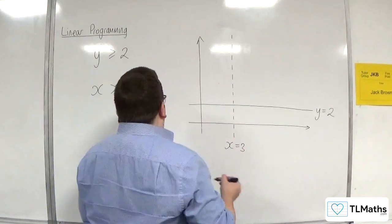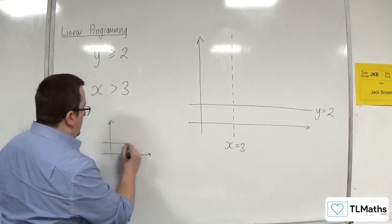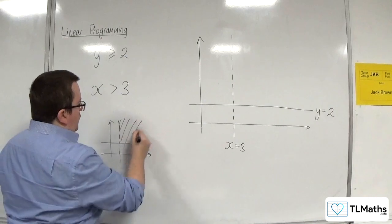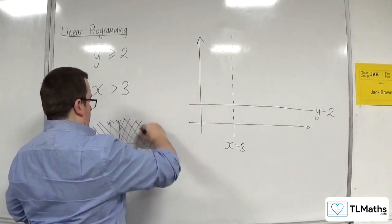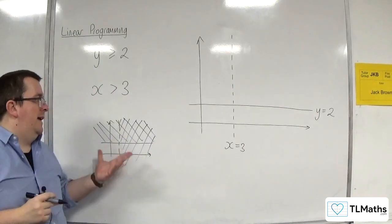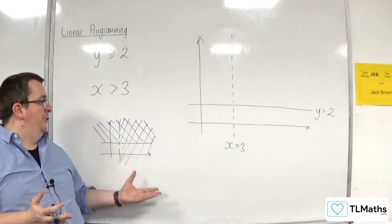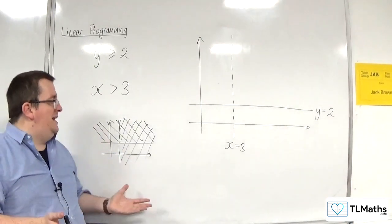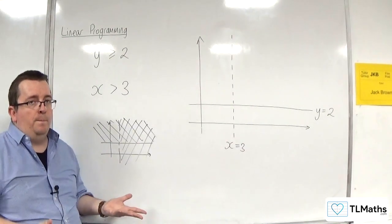You know, if I do a smaller version down here, so we've got that and that. Now, if I start shading in the region that I want, I am currently only at 2 inequalities. If I had 5 or 6 inequalities on the same axis, then it becomes really difficult to determine what region you're actually considering.